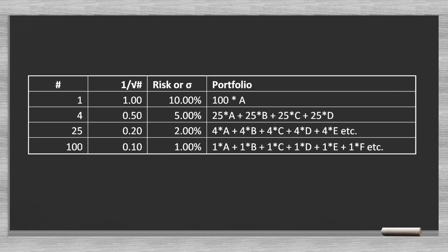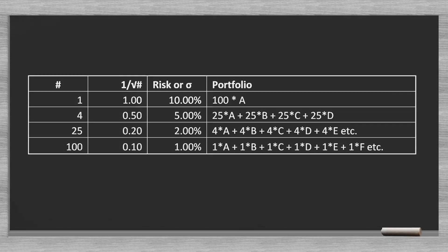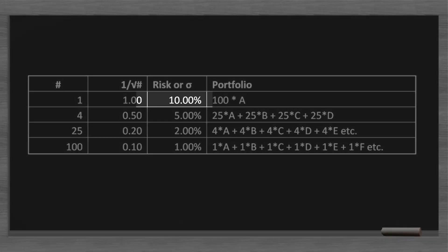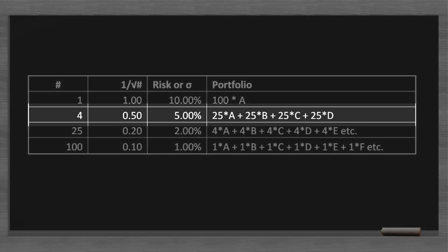Let's look at an example. Say you have a portfolio of one stock — 100 shares of company A. The risk, or standard deviation, of the annual returns is 10%. We often use the Greek letter sigma to express the risk. Now we diversify our portfolio and split it up into a portfolio of shares A, B, C, and D. We hold 25 shares of each stock.